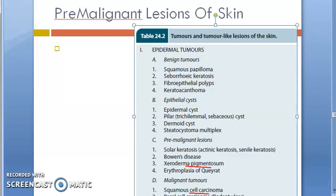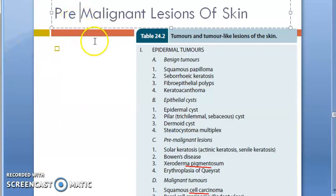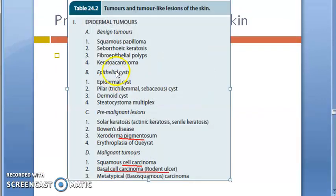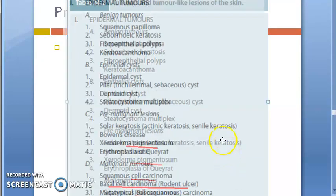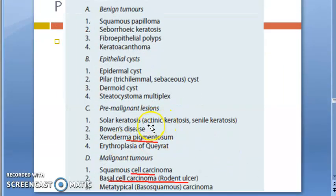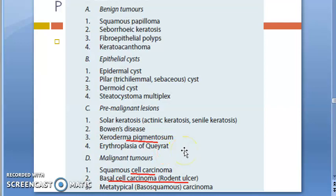In the exam they have asked pre-malignant lesions of skin, so please focus here. In epidermal tumors they have given the pre-malignant lesions — look at them: solar keratosis, also called actinic keratosis or senile keratosis; Bowen's disease; xeroderma pigmentosum; erythroplasia of Queyrat. Remember these: Bowen's disease and erythroplasia of Queyrat — we have already seen them.